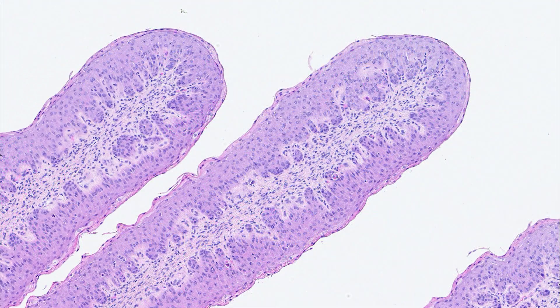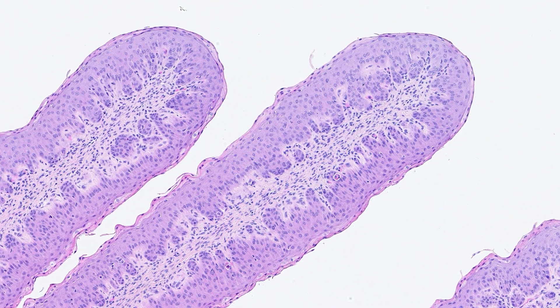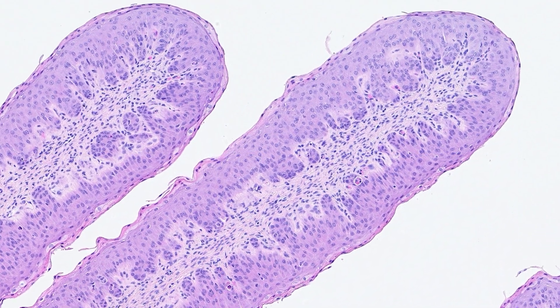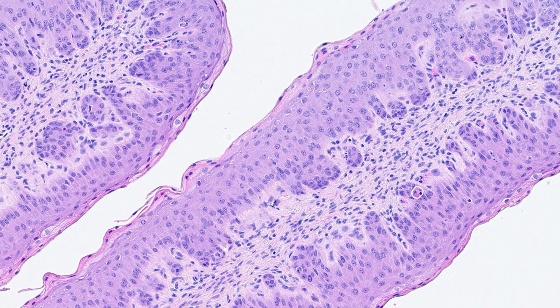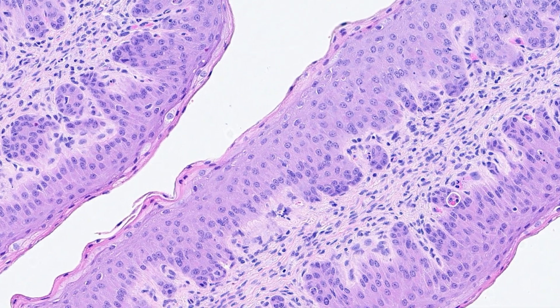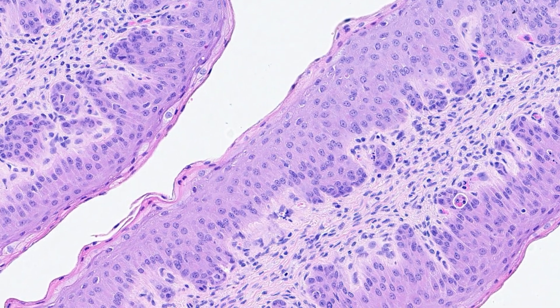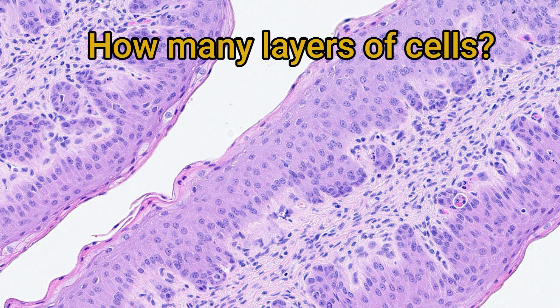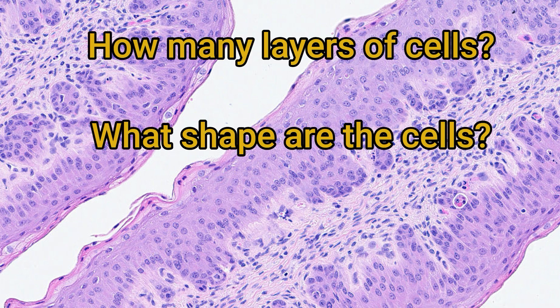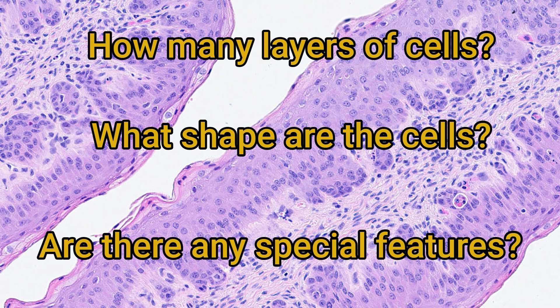So what are the different types of epithelium? Whenever you find some epithelium, I want you to ask yourself three questions: How many layers of cells are there? What shape are the epithelial cells? And do the cells have any special anatomic or functional features?